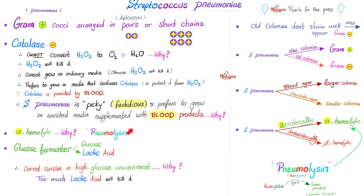Ever wonder why? Because it has pneumolysin, which is a hemolysin, which will break down and lyse hemoglobin. And when you break down hemoglobin, what do you get? Biliverdin.